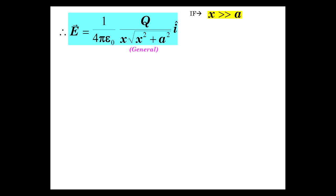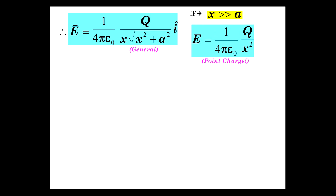Now, what happens if x is much greater than a? If x is really big — the distance to point P is much larger than the length of charge — if you walk a long ways away and look back at a finite line of charge, it starts looking like a point charge. The a-squared term becomes negligible with respect to x-squared, so the whole thing reduces to Q over 4 pi epsilon-zero x squared, which is in fact the formula for a point charge. That is what it becomes as x gets very large.